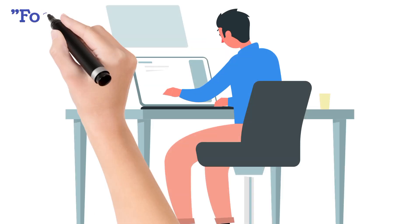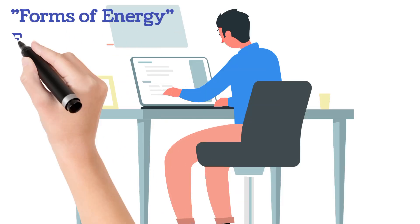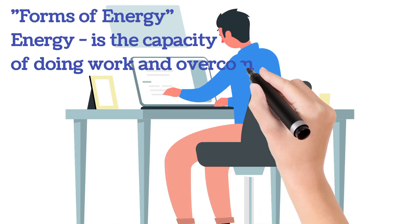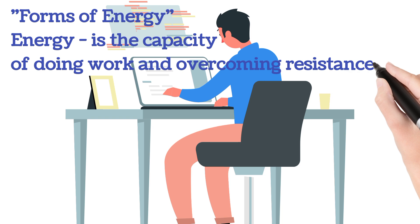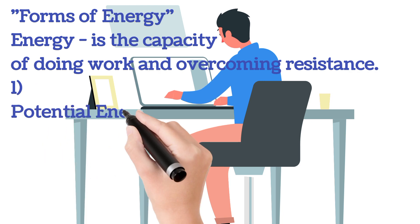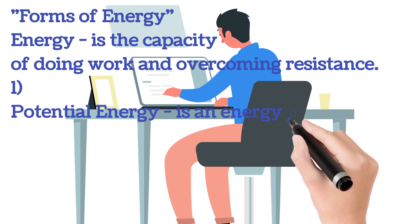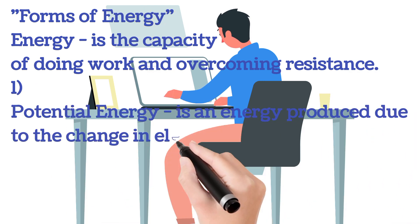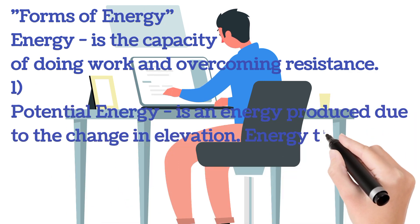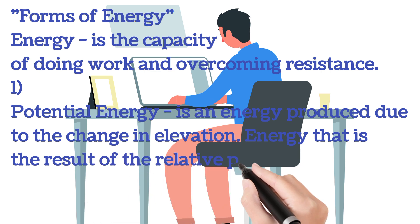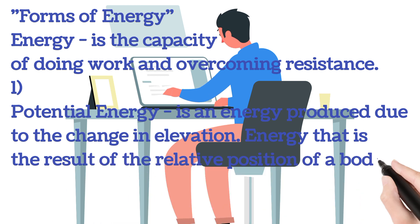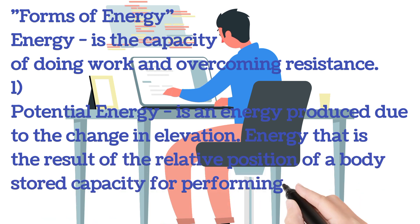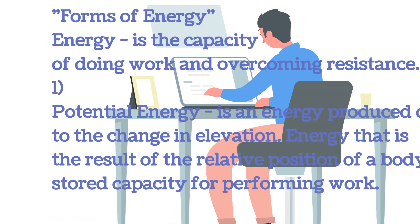Forms of energy: energy is the capacity of doing work and overcoming resistance. Number one, potential energy: is an energy produced due to the change in elevation. It is the energy that is the result of the relative position of a body — a stored capacity for performing work.